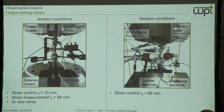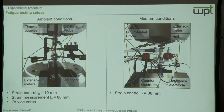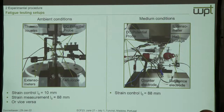Both extensometers were used to control tests. For the medium testing setup, the 10 mm gauge length extensometer has to be removed since there is a PMMA cell around the specimen, which has an inlet and outlet for electrolyte — always fresh electrolyte around the specimen. This allows us to have a standard three-electrode setup: reference electrode, counter electrode, and the specimen itself as the working electrode, so we can track open circuit potential during the test.